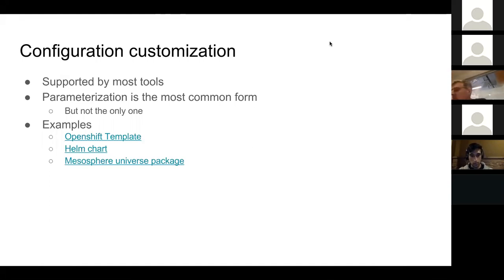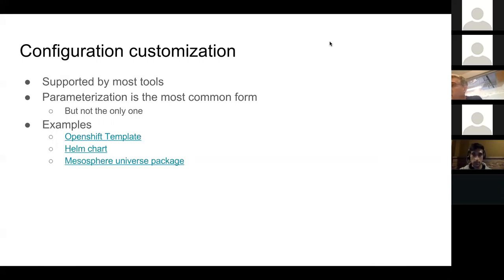I'm going to quickly go through some customization examples to inform why there's no silver bullet and why people seem to want to try multiple different approaches. A lot of people think of customization in the context of templatization or parameterization - making it possible to instantiate a declarative configuration in multiple different ways depending on some context. That context might be parameter values or something else. Really the broad thing you're trying to do is take an off-the-shelf configuration and customize it for your needs. It's supported by almost all those tools I listed before.